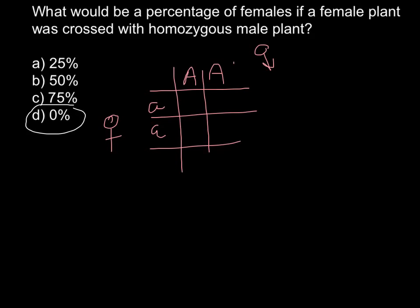So what we get here, this would be a small a and a capital A, small a capital A, and all would be the same, and a small a and a capital A is heterozygous and all heterozygous plants are male. So all 100% of such a cross would be male plants that is heterozygous. So the question was what would be percentage of females. So the correct answer as I said is D because there wouldn't be any females at all.